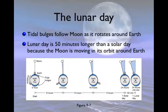And the lunar day is actually 50 minutes longer than a solar day. And this is due in large part because the Moon is revolving in its orbit around the Earth, as well as the Earth rotating on its axis. So we're sort of combining two things. So let's see how this works in this animation I have on the next page.